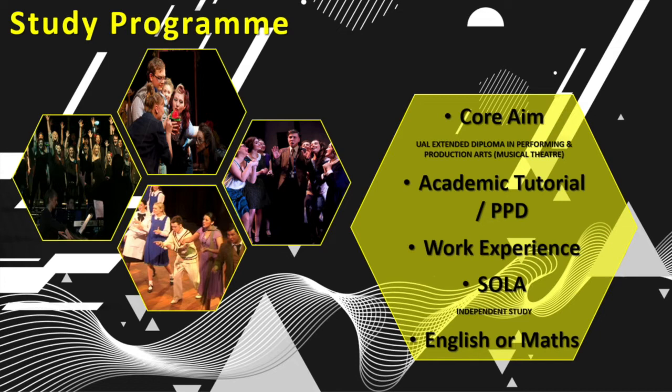Your Level 3 Musical Theatre qualification is awarded through UAL, the University of Arts London, and will give you an extended diploma in Performing and Production Arts. After two years of study, you will hold a qualification equivalent to three A-levels.